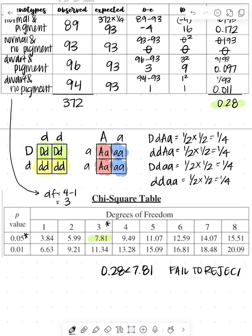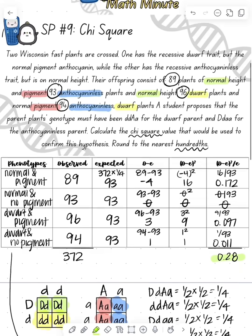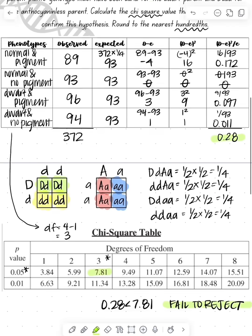So 0.28 is less than 7.81. So we're going to fail to reject our null. Hope this helped from APBioPaymen.